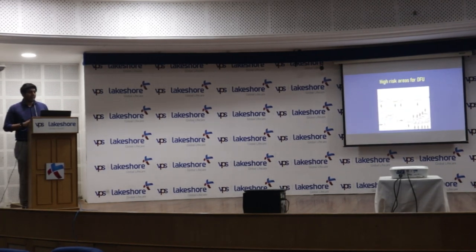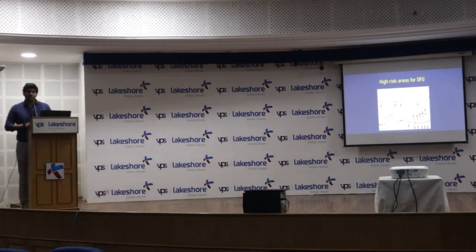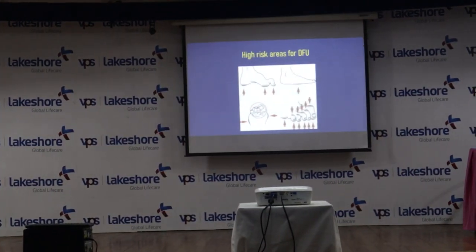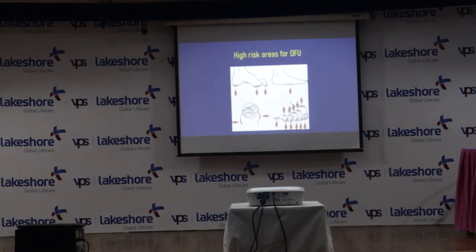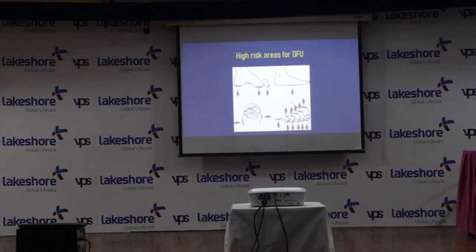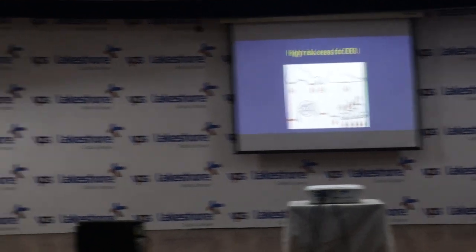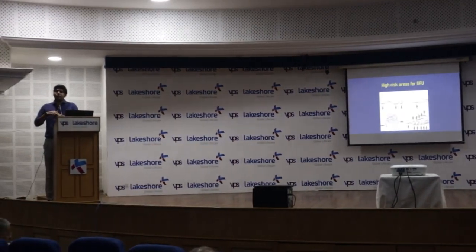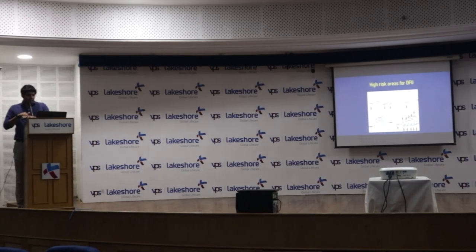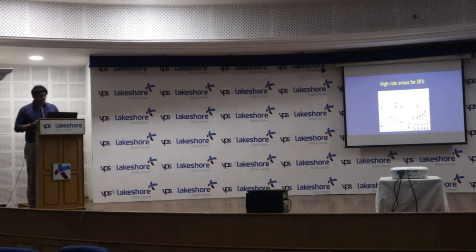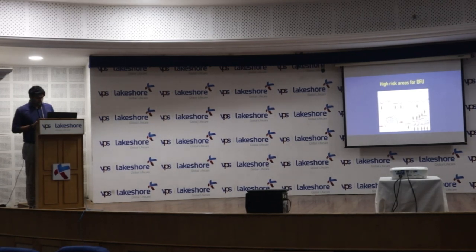High-risk areas for diabetic foot ulcer include the tips of the toes, the metatarsal heads, and the heel. Crowding of toes can cause ulcers on the medial and lateral sides. Tight footwear can cause ulcers on the dorsal aspect, and flat foot can cause ulcers in the mid-foot region.